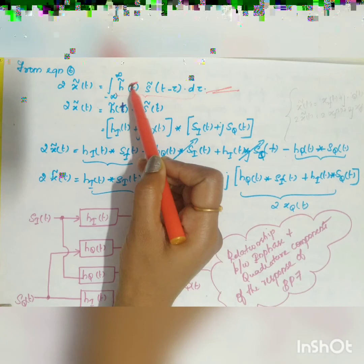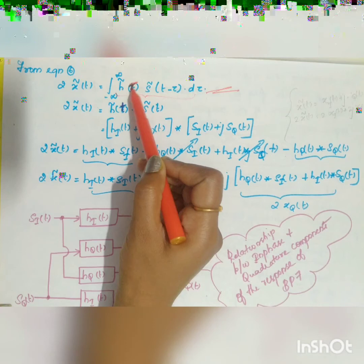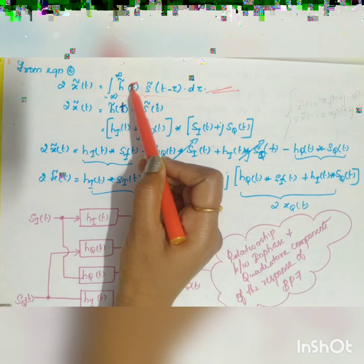For the frequency domain procedure there are six steps. Step 1: determine the impulse frequency response H̃(f) using the relation H̃(f − fc) = 2·H(f) for f > 0. Step 2: express the input bandpass signal s(t) in canonical form: s(t) = si(t)·cos(2πfct) − sq(t)·sin(2πfct). Step 3: evaluate the complex envelope s̃(t) = si(t) + j·sq(t), then compute its Fourier transform S̃(f).